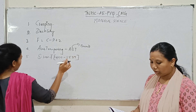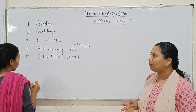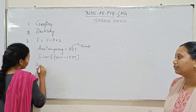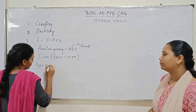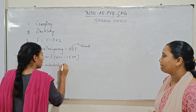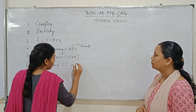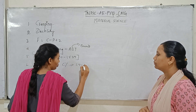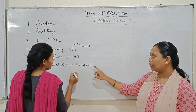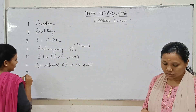For hypo-eutectoid cast iron, the carbon content falls in the range of 1.7 to 4.3 percent.